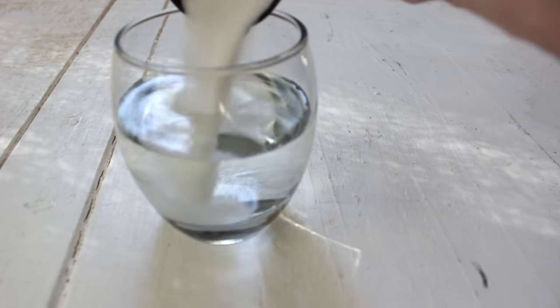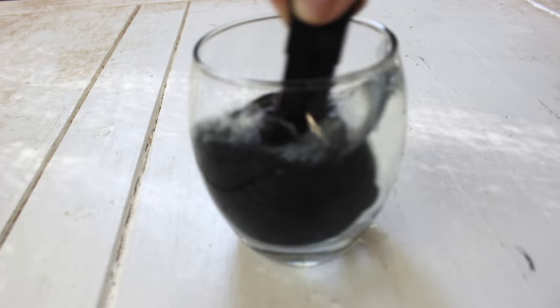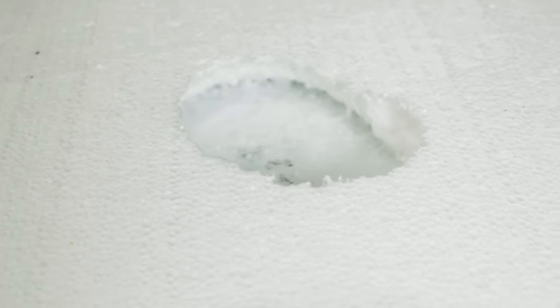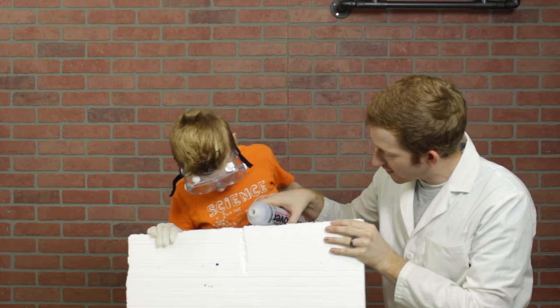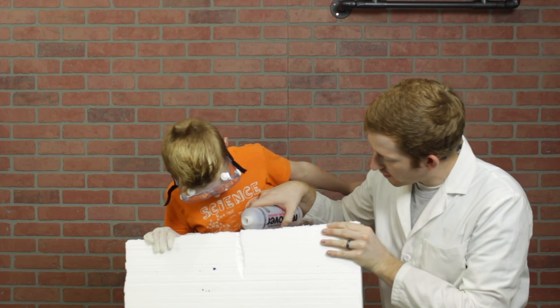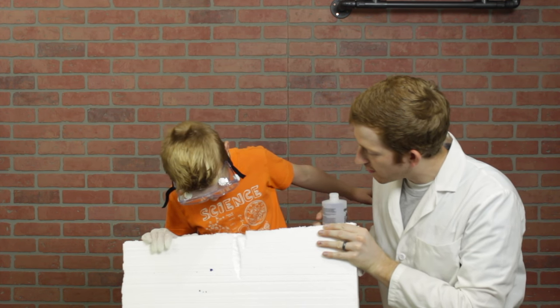It's kind of like how water is good at dissolving sugar, making the sugar seem to disappear. Acetone is especially good at dissolving styrofoam, so good, in fact, that you can make an entire block of it seem to disappear just by touching the two together.